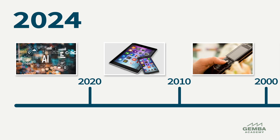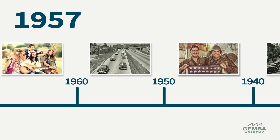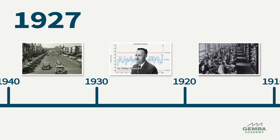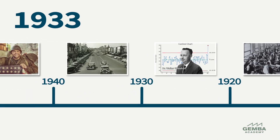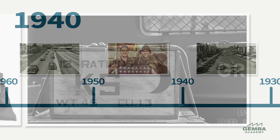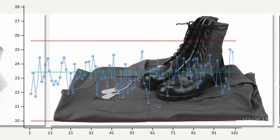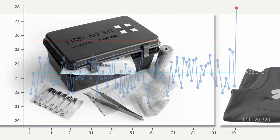We can trace the roots of SPC back to the early 20th century. Dr. Walter Shewhart of Bell Laboratories was among the earliest to develop the control chart in the 1920s. During World War II, statistical quality control techniques were widely applied in the United States to improve the quality of war materials.